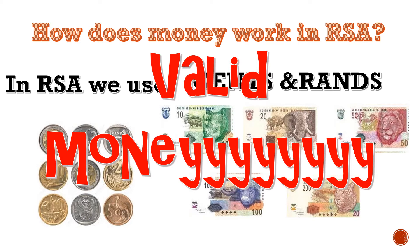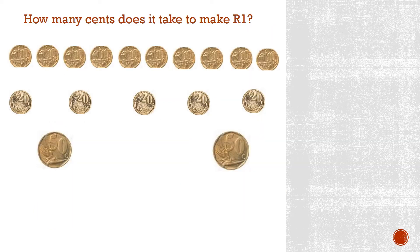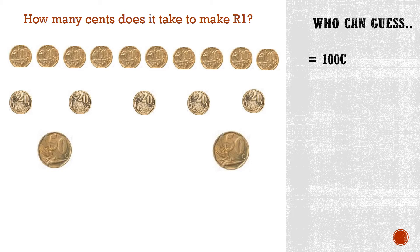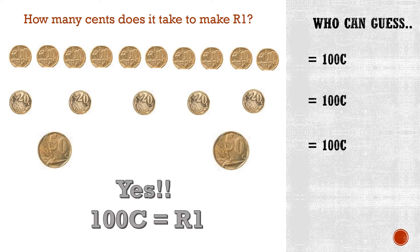Later on in the lesson you will understand why I call it valid money. Who can guess how many cents does it take to make 1 rand? If we count in 10 cents, we have 10, 20, 30, 40, 50, 60, 70, 80, 90, 100 cents. And if we count in 50 cents, we have 50 cents and 100 cents. It takes 100 cents to make 1 rand.